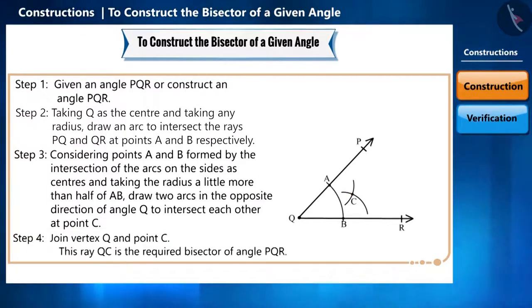Now, we will join vertex Q and point C. This ray is the required bisector of angle PQR. So, in this way, we have constructed the bisector of a given angle.